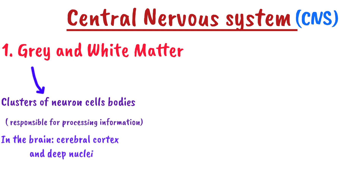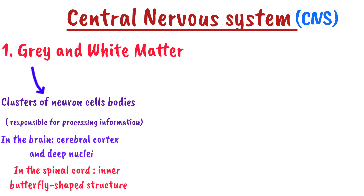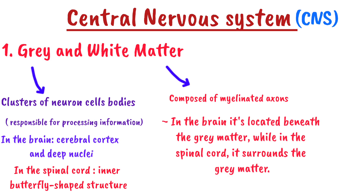The gray matter contains clusters of neuron cell bodies and is responsible for processing information. In the brain it forms the cerebral cortex and neural nuclei, while in the spinal cord it forms the inner butterfly-like structure. The white matter is composed of myelinated axons, forming the pathways that transmit information. In the brain it is located beneath the gray matter, while in the spinal cord it surrounds the gray matter.